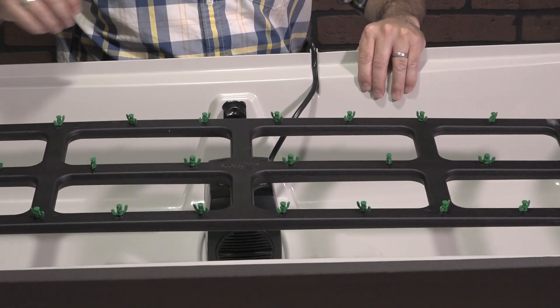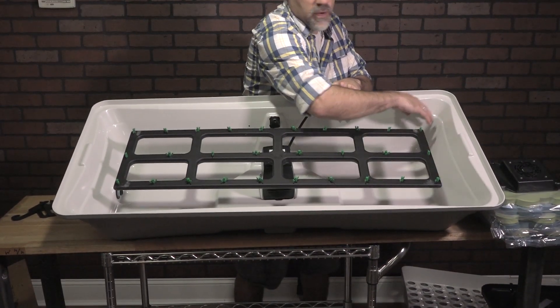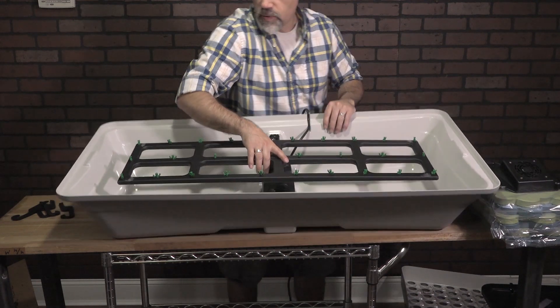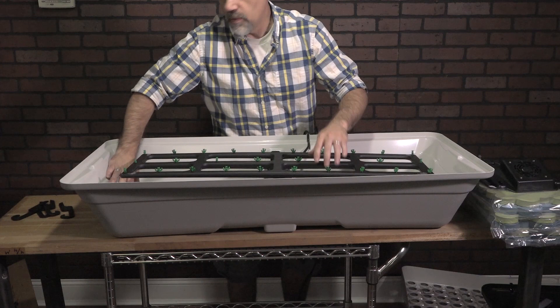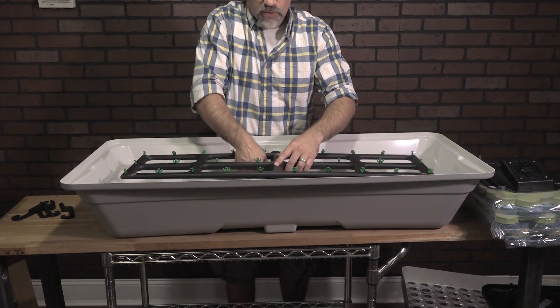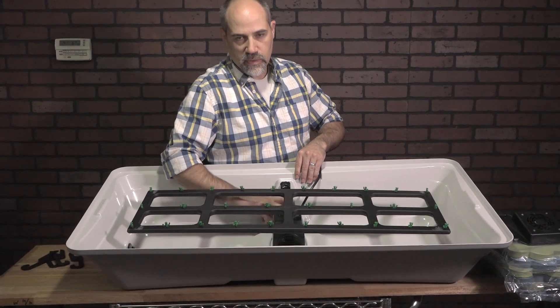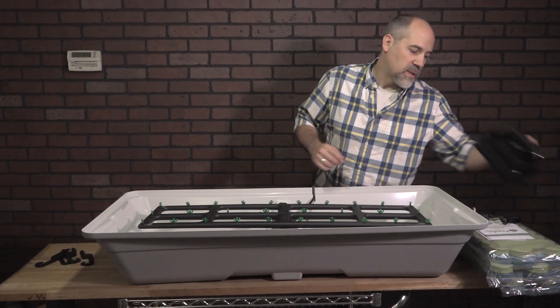One of the unique features of the TurboClone system is this here: a water fill line that's built into the mold of the reservoir. So now you don't have to pre-measure your water. You can just put the water in right to that water fill line and you're good to go. You'll find that it just comes just below the baffle where air from your fan comes into the system.